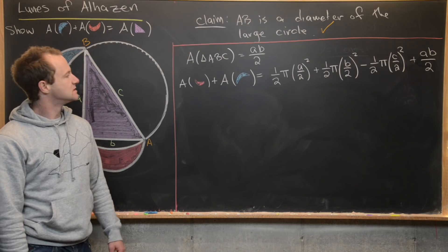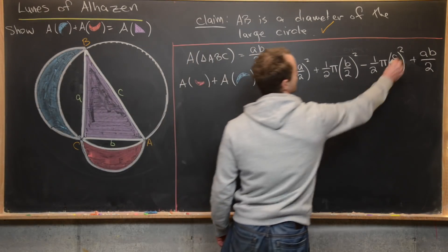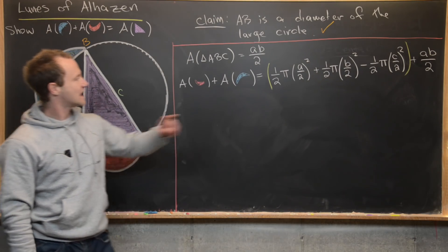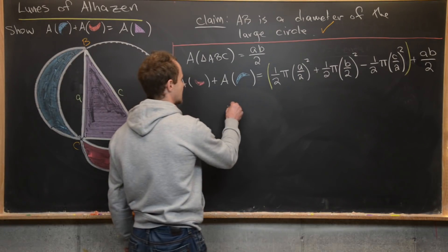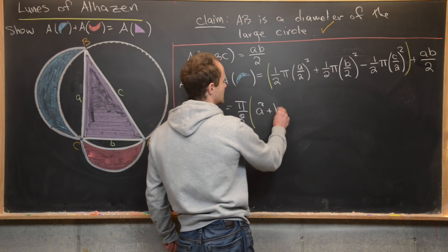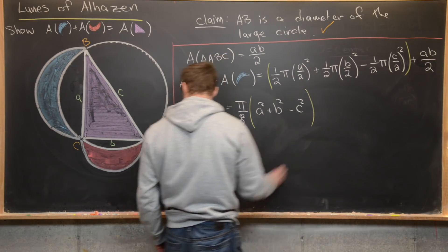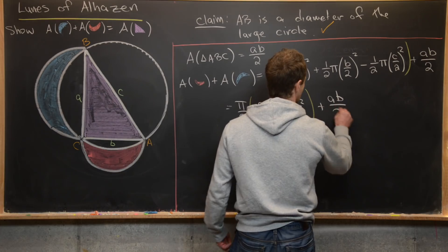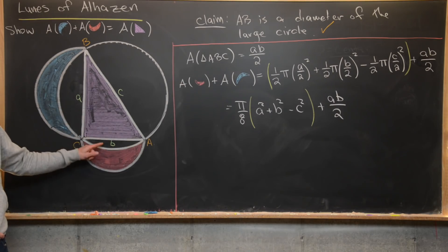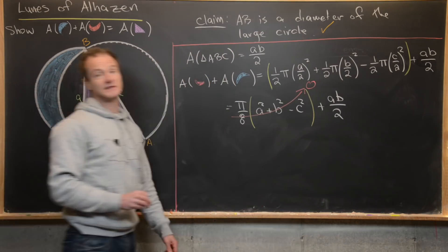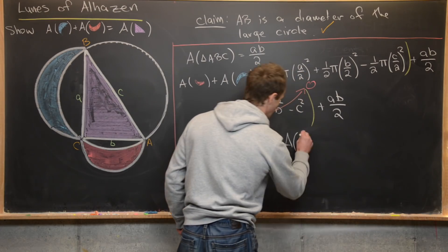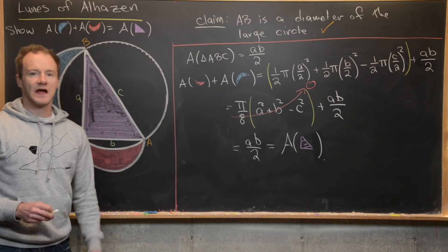Factoring from the first three terms, we get (π/8)(a² + b² − c²) + ab/2. But since triangle ABC is a right triangle, the Pythagorean theorem tells us a² + b² = c², making that parenthetical expression equal to zero. We're left with just ab/2, which is exactly the area of our triangle. This completes the proof that the sum of the two lunes equals the area of the right triangle.